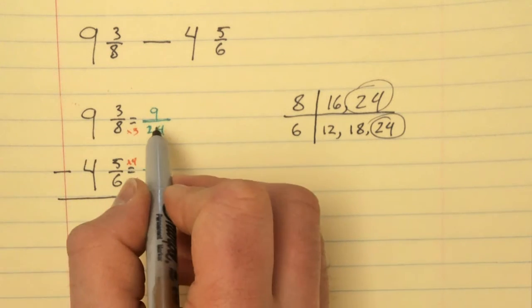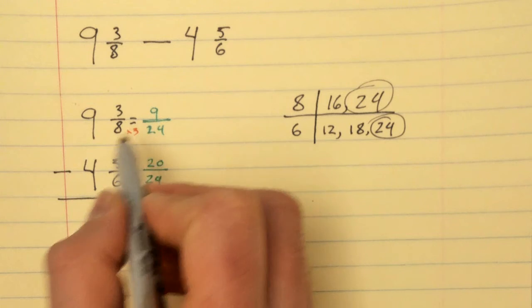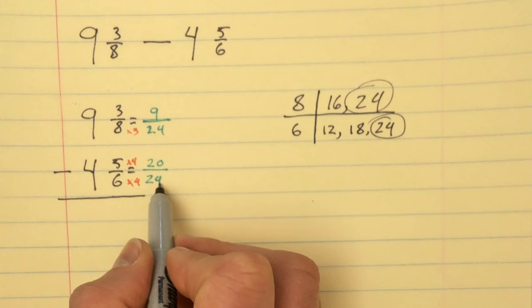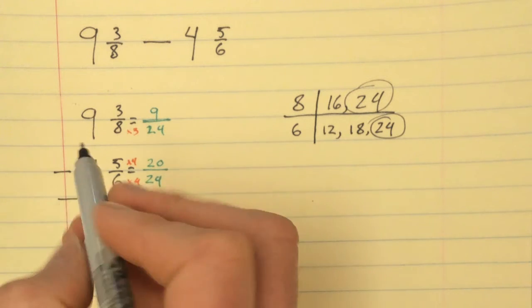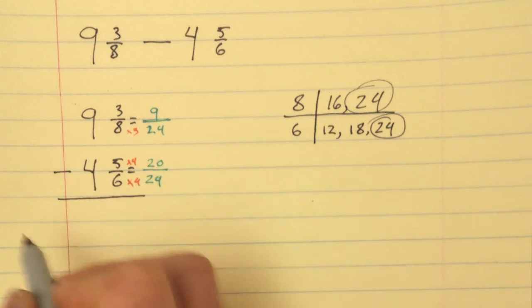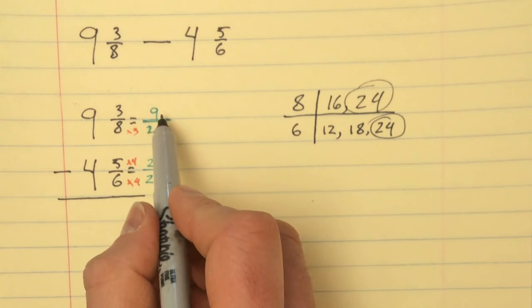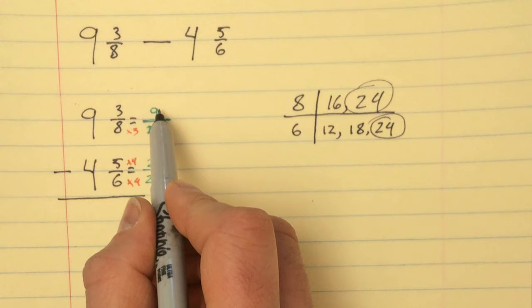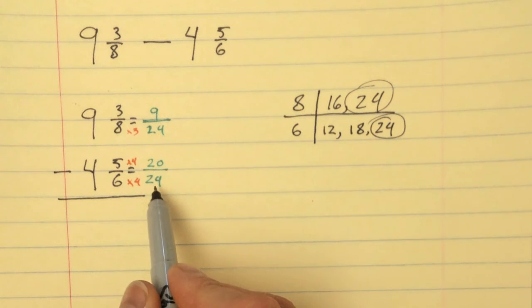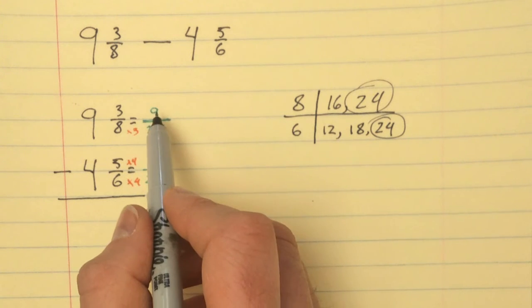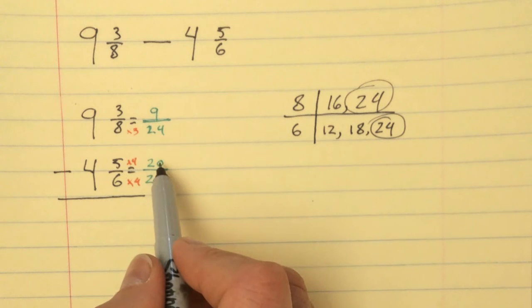top number in general, 9 and 9/24, is definitely larger than 4 and 20/24. The whole number is, but, or I should say the entire number, that's probably a better description. But just in this place value, right, in our twenty-fourths place, as it were, we could say that 9/24 is not greater than 20/24, so I cannot take 20/24 away from 9/24